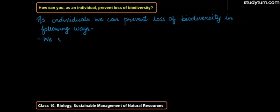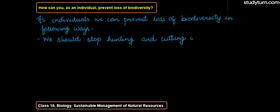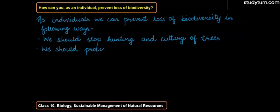And how can we as an individual protect these or prevent loss of biodiversity? First, we should stop hunting — hunting of various animals — and cutting of trees. If we do not cut trees and stop hunting, we can help protect biodiversity.